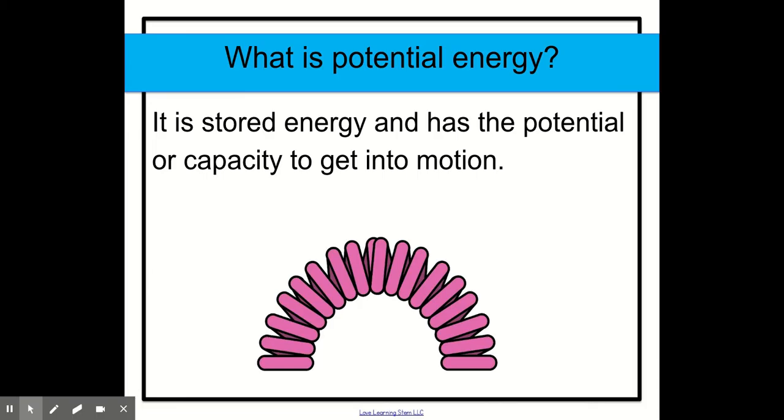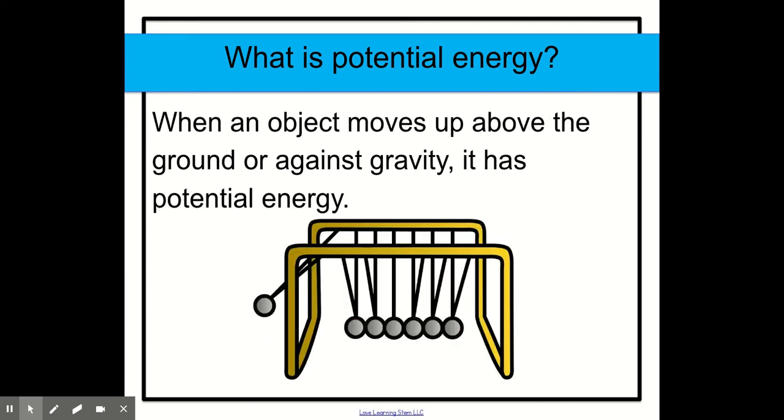So now that we've kind of looked into kinetic energy, what exactly is potential energy? Well, potential energy is the energy that is stored. Yes, energy that is stored and has the potential or capacity to get into motion. So it's not in motion, but it has the potential to get into motion. And that's when it is called a potential energy. So when an object moves up above the ground or against gravity, it has potential energy. You see the little ball on this Newton's cradle. When it's being moved up, when the person is moving up the little ball, it has potential energy. But when you release the little ball, the energy changes to kinetic.